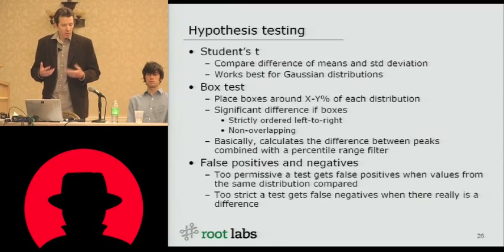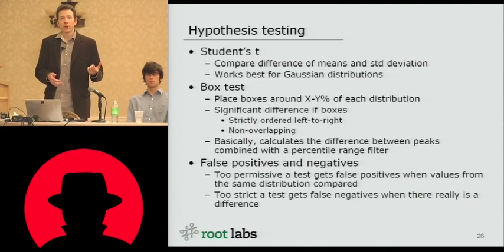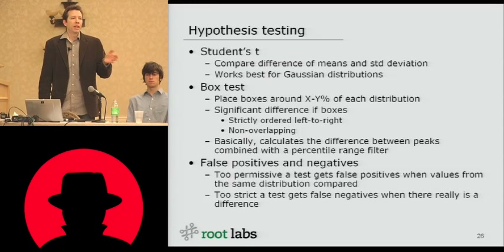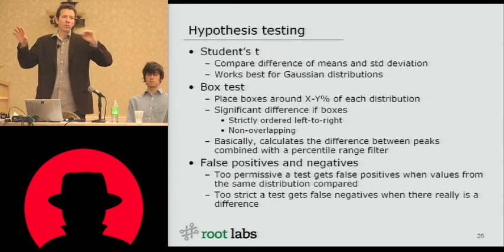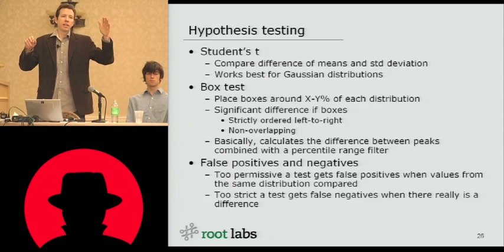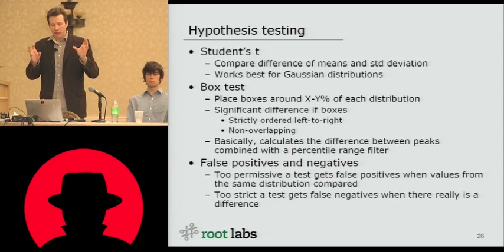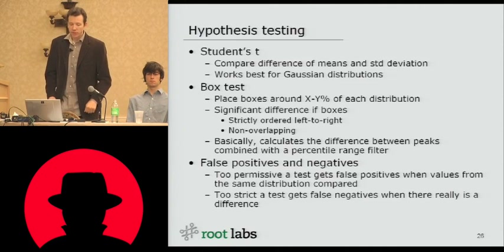The approach we actually ended up using — Student's t worked okay for some particular configurations, but not generally well. We actually implemented the box test, which is based on the percentile range filters we talked about before. What you do is you create a box with a particular set of parameters between X and Y percent — say 10 and 35 percent. For each distribution you've got two sets of samples; you apply the box to both of them, filtering out the lowest 10 percent and throwing out the upper 65 percent, and compare these two boxes. If the two boxes are strictly ordered — meaning the box you expect to be less is on the left and the box you expect to be more is on the right, and they're not overlapping — then you signal that as a difference.